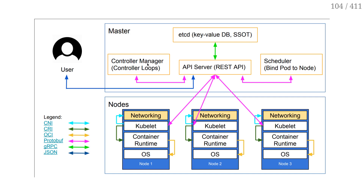Then we have the controller manager and scheduler. The controller manager is a set of loops, each responsible for a specific type of object. In Kubernetes, we have a bunch of different objects like deployments, pods, nodes, and services. For each object type, there is a control loop that watches these objects, and when something needs to happen, it's the controller manager's job to carry out that action. The API server is like the central nervous system of the cluster, and the controller manager is the legs and arms carrying out the actual actions.